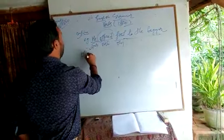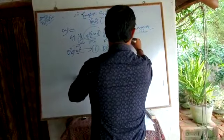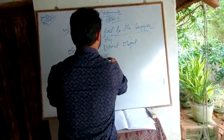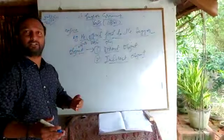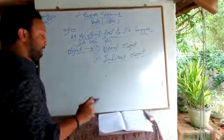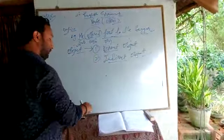Objects are of two types: Direct Object and Indirect Object. The names are Direct and Indirect. Example: